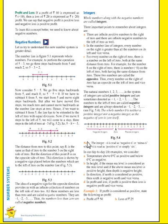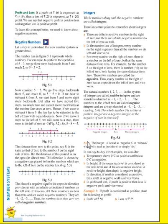In our day-to-day life examples: temperature above zero degrees Celsius is positive and below zero degrees Celsius is negative. In height, if the main sea level is considered as zero level, then above sea level is positive height and depth is negative height. In direction, if north is positive then south is negative. In profit and loss, if profit is positive then loss is negative, and vice versa.